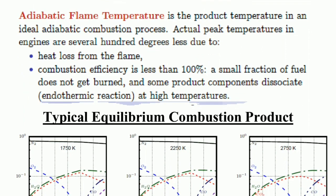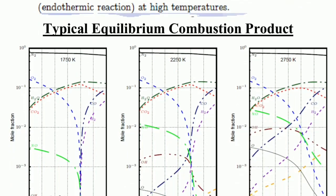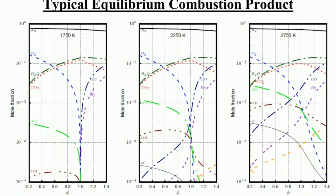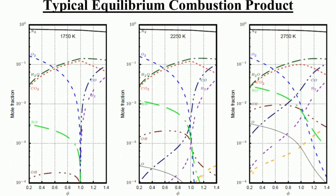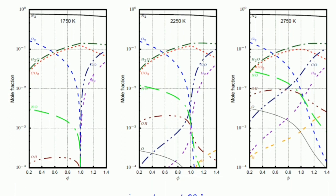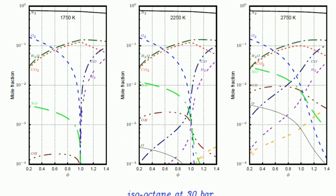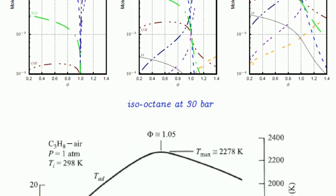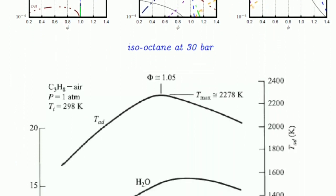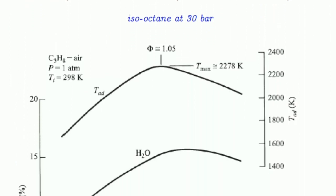Typical equilibrium combustion products: there are three different figures where the y-axis shows mole fraction and the x-axis shows equivalence ratio. This is for isooctane at 30 bar. There are many different colored lines used for indicating different species.